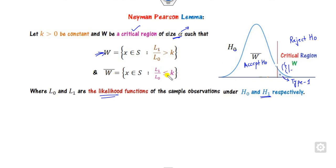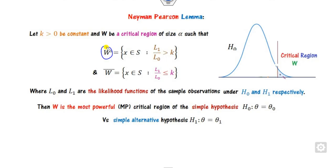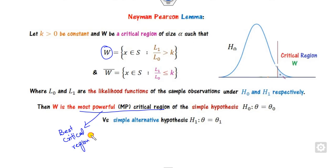For the complement of W the ratio will be opposite. When this condition is satisfied, that critical region W is called the most powerful critical region, or best critical region (BCR). This is a well-known notation in testing of hypotheses, against simple null hypothesis H0 and simple alternative hypothesis H1.